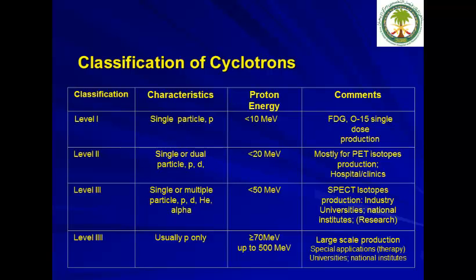Level 3 cyclotron accelerates single or multiple particles and is usually less than 50 MeV. It can produce both PET radiopharmaceuticals and other PET isotopes, and is typically located in industry, universities, or national institutes. Level 4 cyclotron is proton-only, always greater than 70 MeV and up to 500 MeV, used for larger-scale production, located in universities and national institutes, and recently used for proton therapy.